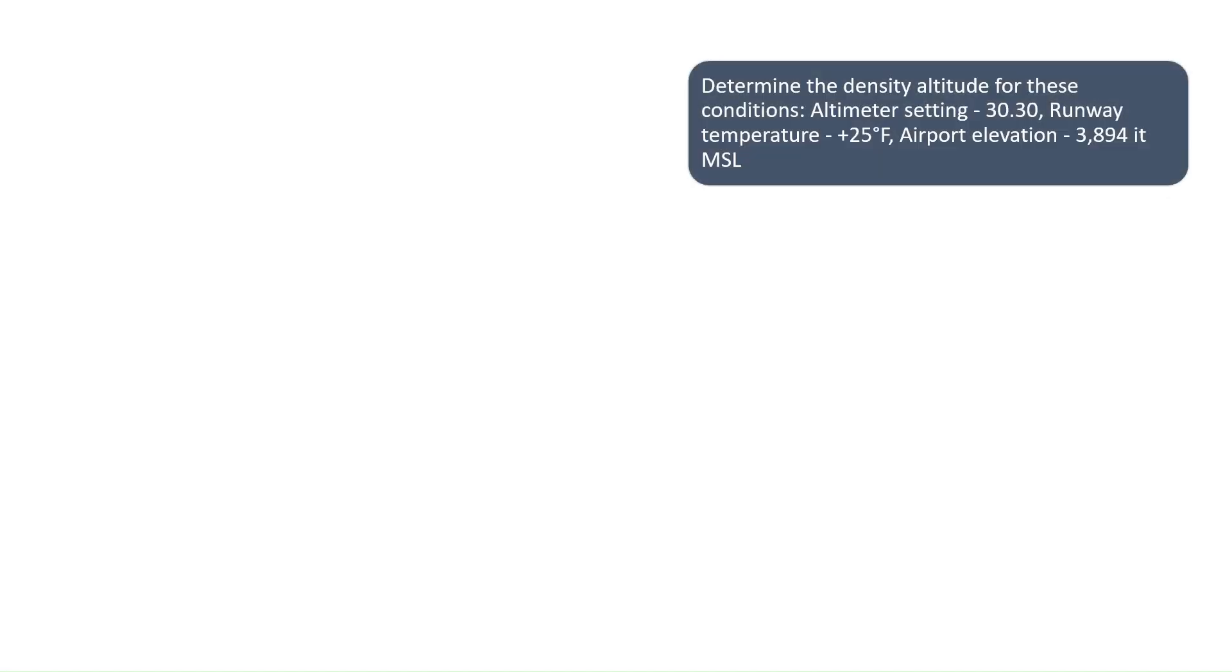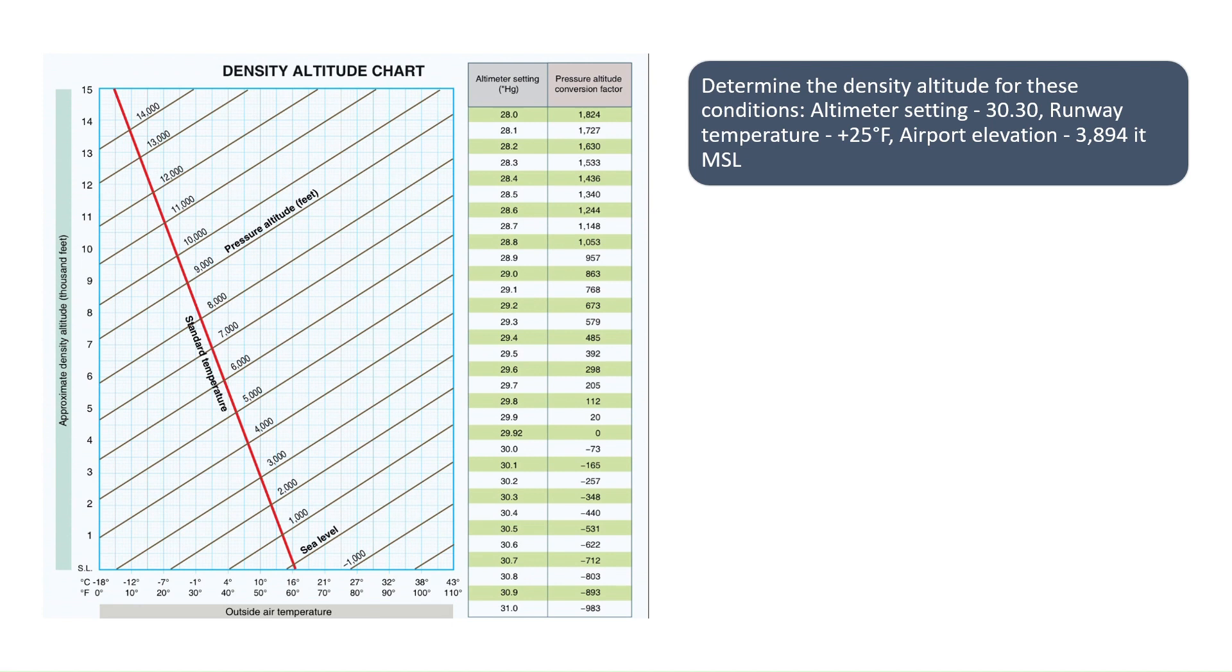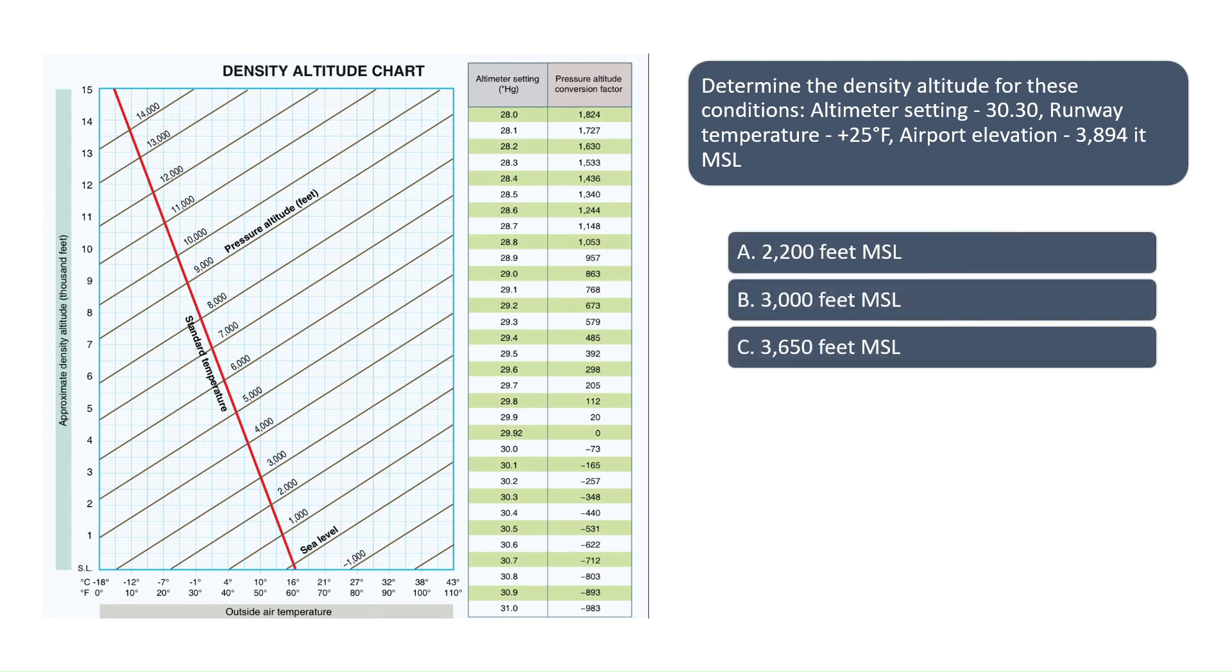Determine the density altitude for these conditions. The altimeter setting is 30.30, the runway temperature is 25 degrees Fahrenheit, and the airport elevation is 3,894 feet above mean sea level.